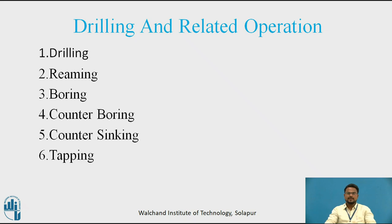Coming to reaming: reaming is a sizing and finishing operation performed on previously drilled holes. A tool called a reamer is used for this operation. Reaming can also be done on holes which are drilled slightly to undersize. Coming to boring: boring is generally a hole enlarging operation performed on a previously drilled hole. Boring is performed in the following circumstances: first, to finish a drilled hole; second, to machine the rough surface of cast holes; and third, to correct the center and roundness of the holes.